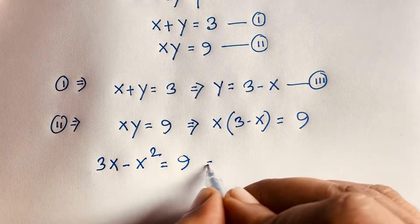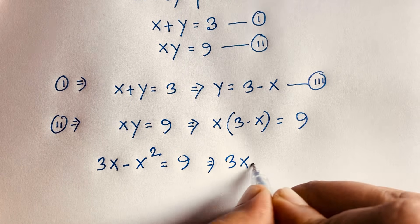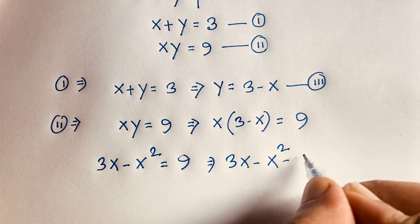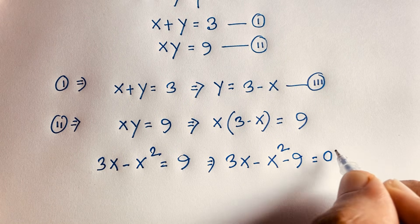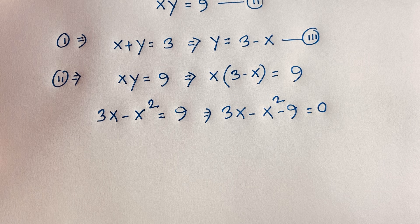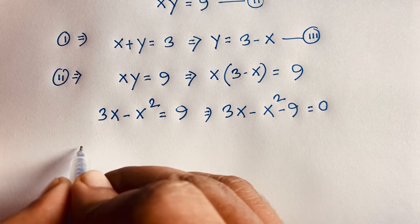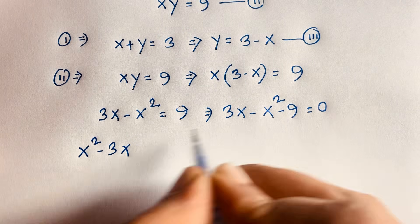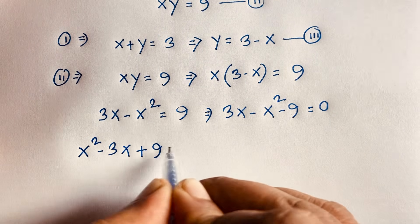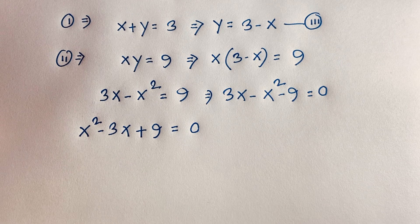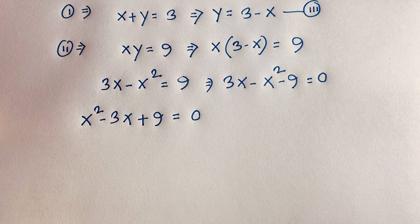Now, rearranging: 3x minus x squared, moving 9 to this side gives negative 9, equal to 0. Factoring out negative 1, we get x squared minus 3x plus 9 is equal to 0. We now have a nice quadratic equation: x squared minus 3x plus 9 equals 0.